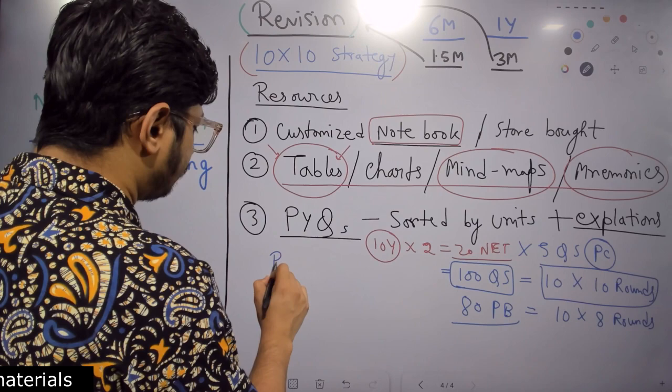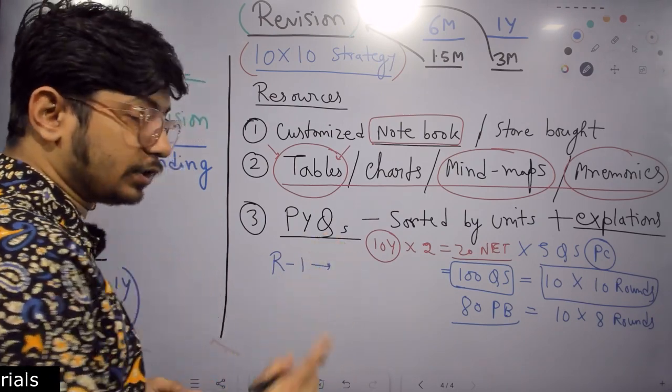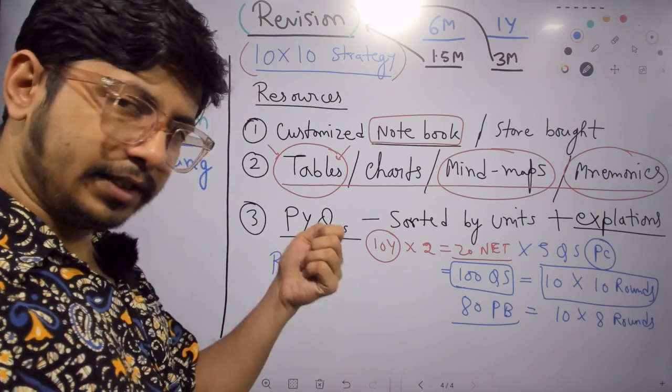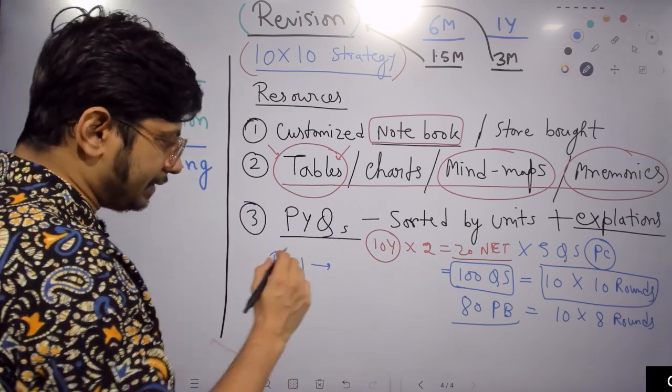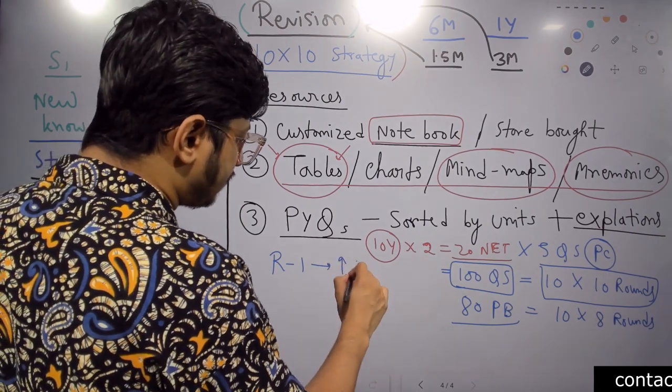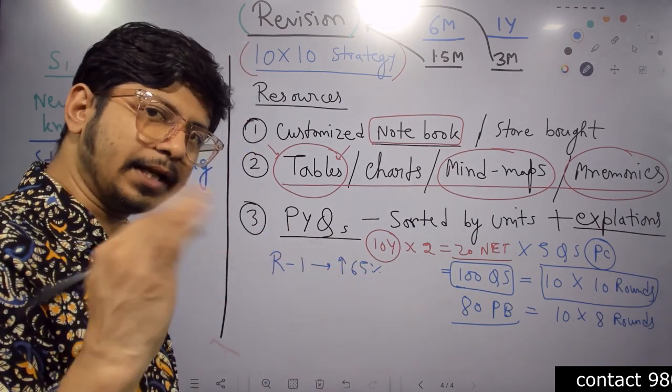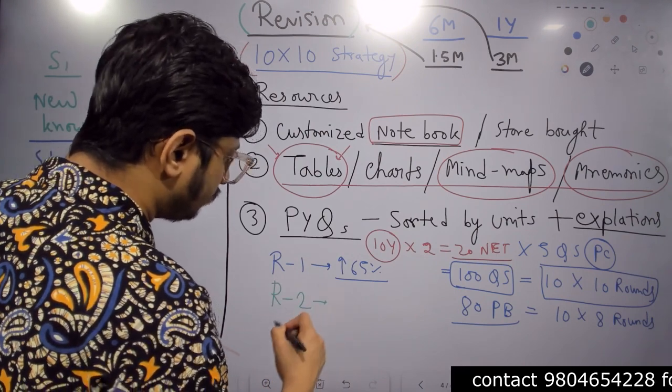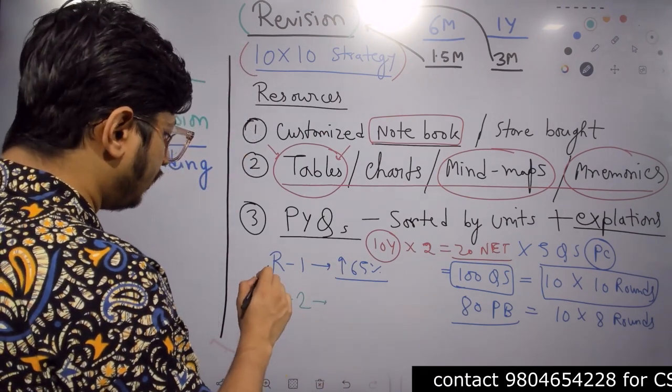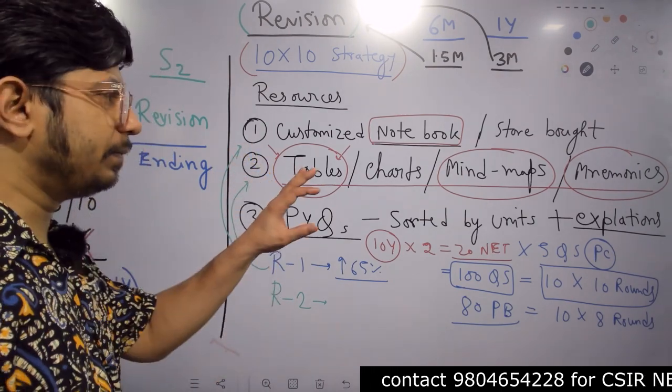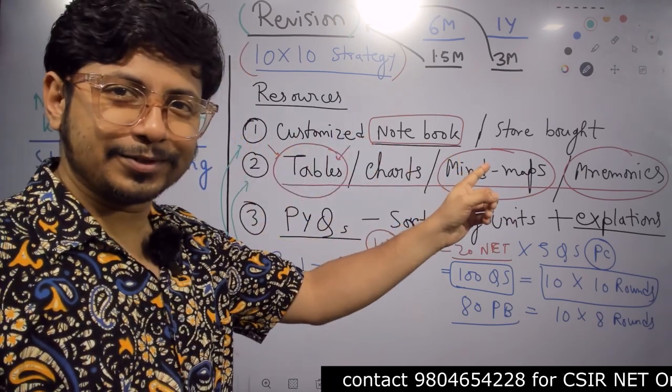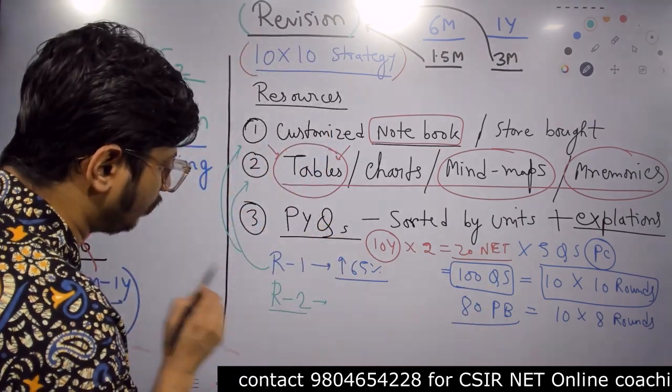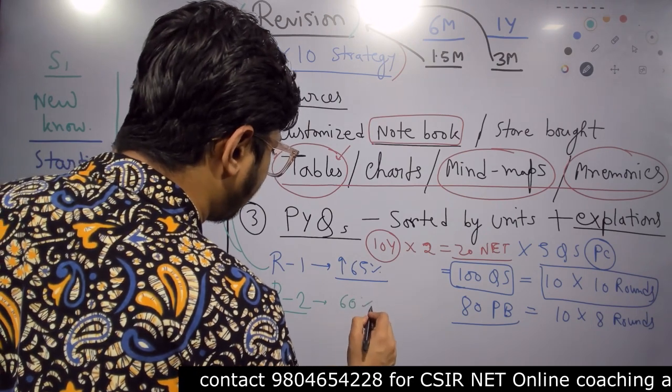So now you revise - how do you revise? You start taking round 1. Answer all the questions without looking at the answer explanation, just look at the question, try to solve them, solve them with time, check the time, time is important, and then check the score. If you get more than 65 percent, you consider that topic done. And if your score is less than 65 percent, then you take round 2. But before going into round 2, you go back to your resources - that is table, charts, mind maps and your customized notes, revise again. So another 2 hours revision. Once the revision is over, at night again open round 2, check your score. Let's say this time 60 percent, even dropped - no good.